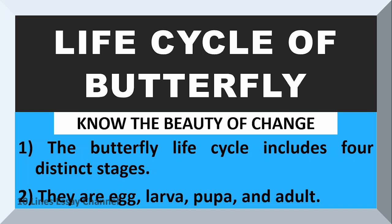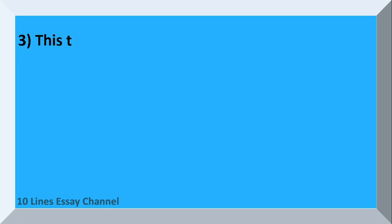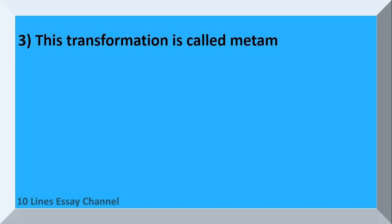The four stages are egg, larva, pupa, and adult. This transformation is called metamorphosis.